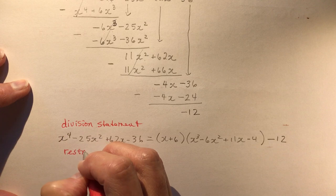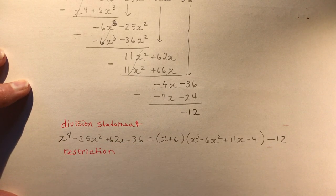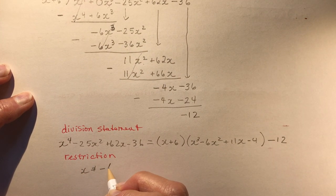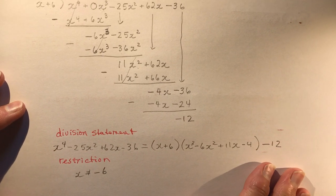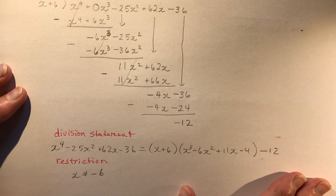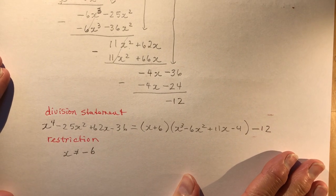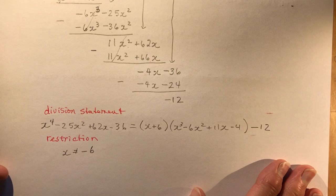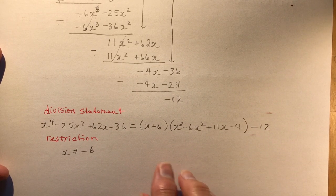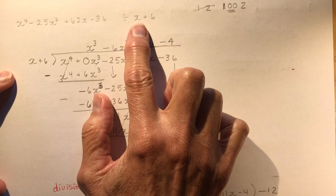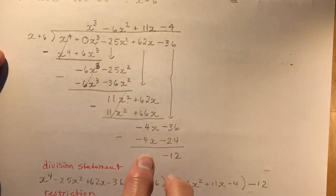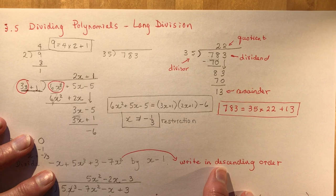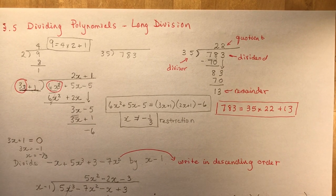The restriction: x plus 6 equals zero when x equals negative 6, so x is not equal to negative 6. Synthetic division is different — it requires remembering a specific trick, which I'll show in the next video. Long division always works, though it can get more complex when dividing by something like 3x plus 6. That's polynomial long division — the next video will cover synthetic division.